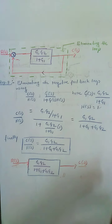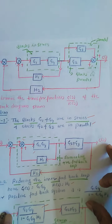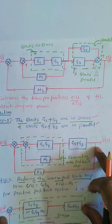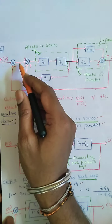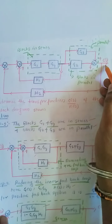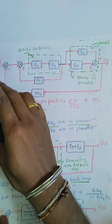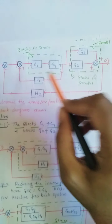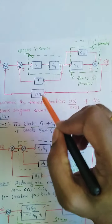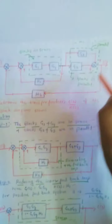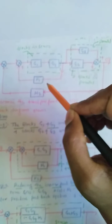Let us take another example on block diagram reduction. The question asks us to find the overall transfer function of the system. We have input R(s) connected to the block diagram and output C(s). The question is to find C(s)/R(s). Between these two points we have blocks G1, G2, G3, G4, and H1, H2. The blocks G1, G2, G3, G4 form the forward path transfer functions, whereas H1 and H2 form the feedback path transfer functions.